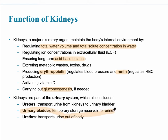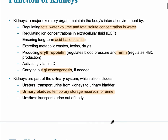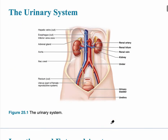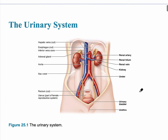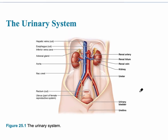The organs within the urinary system, besides the kidney, include the ureters — smooth muscle tubes that go from the kidney to the urinary bladder. The urinary bladder is the temporary storage reservoir for the urine. And finally, the urethra, which transports the urine out of the body.